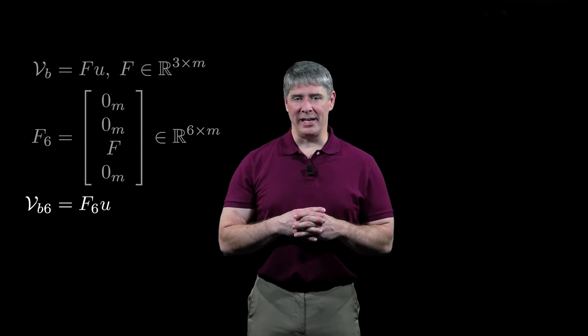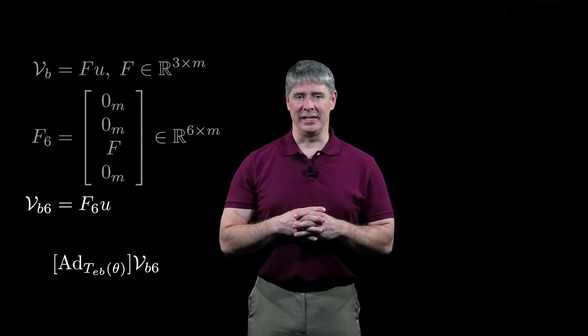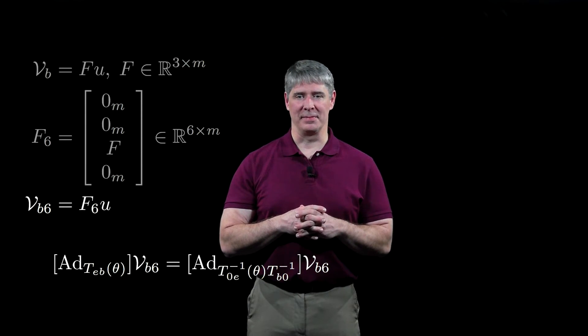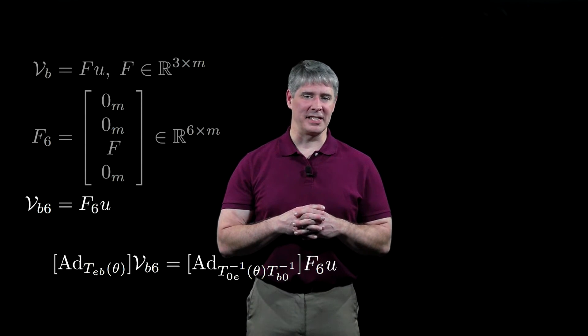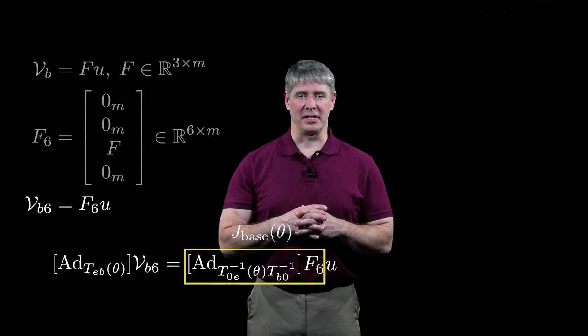To express this twist in the end effector frame, we pre-multiply it by the adjoint matrix of TEB. We can expand this transform to be TE0 times T0B, and then write VB6 as F6u. Then Jbase is just the adjoint matrix times F6.